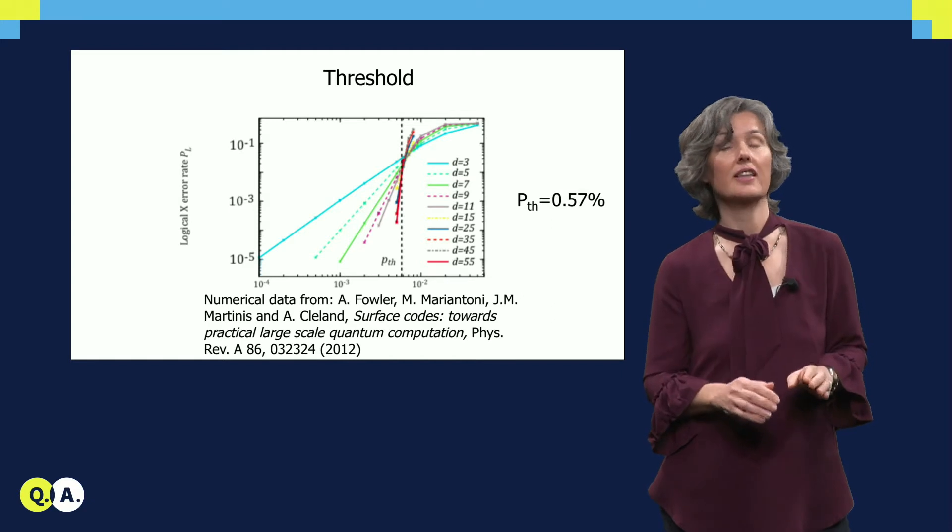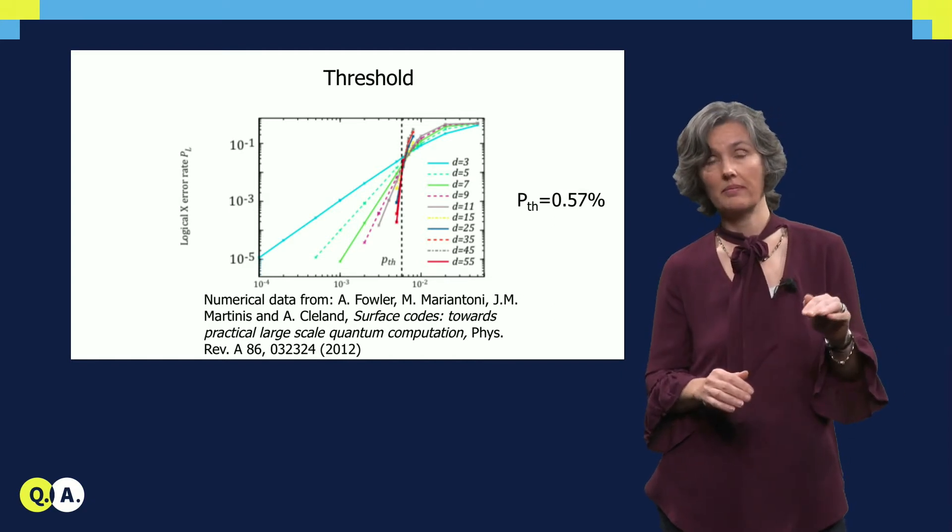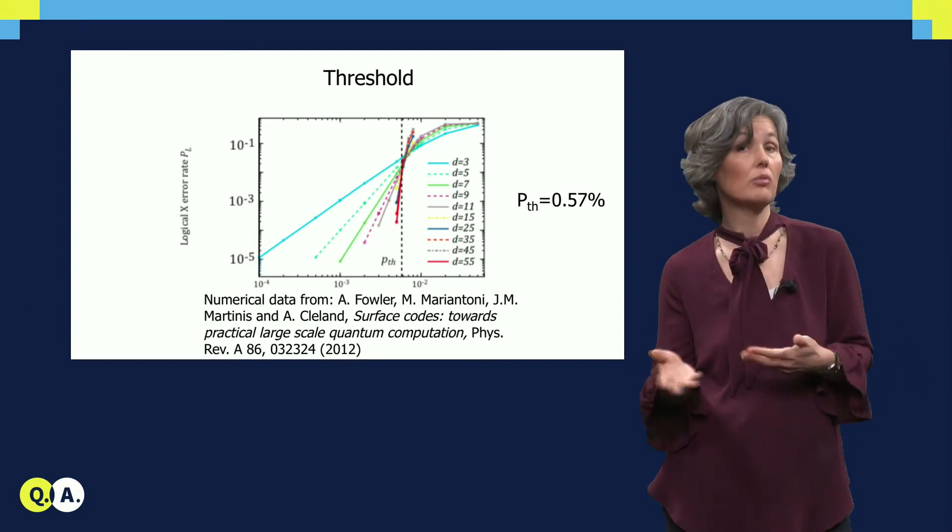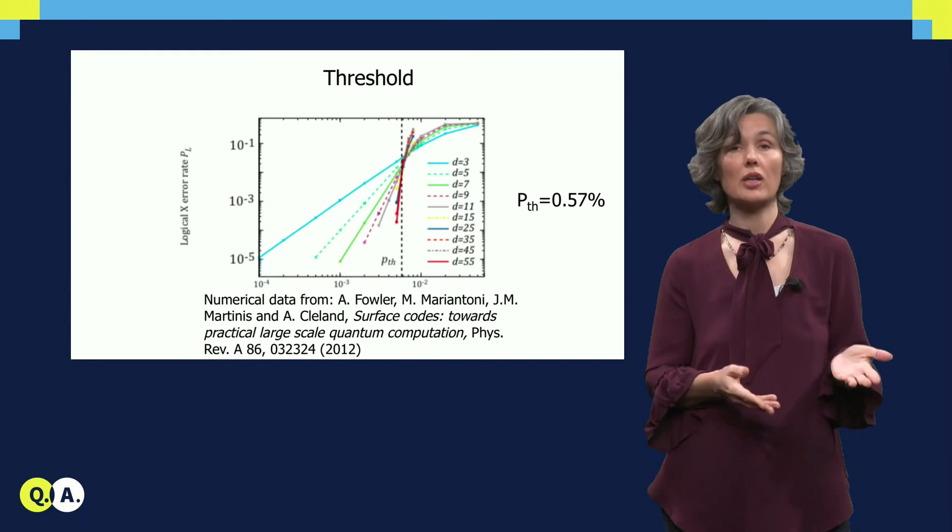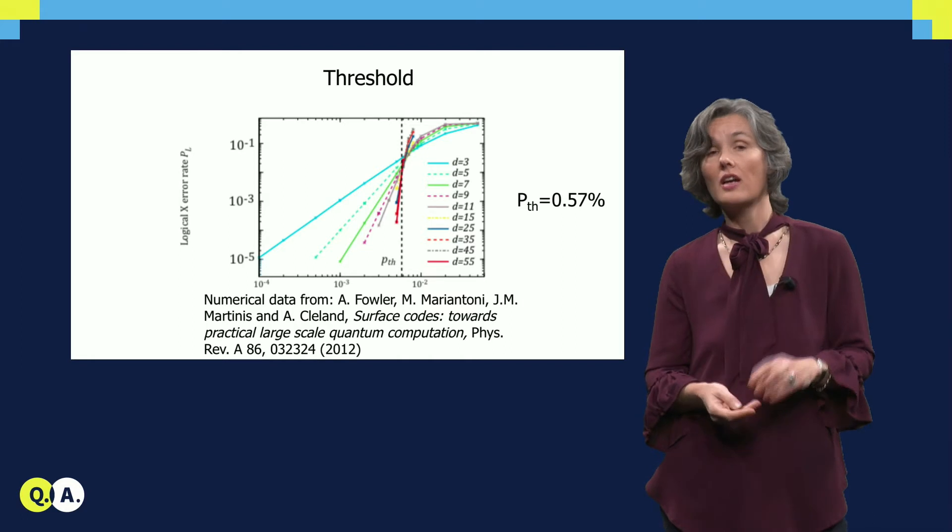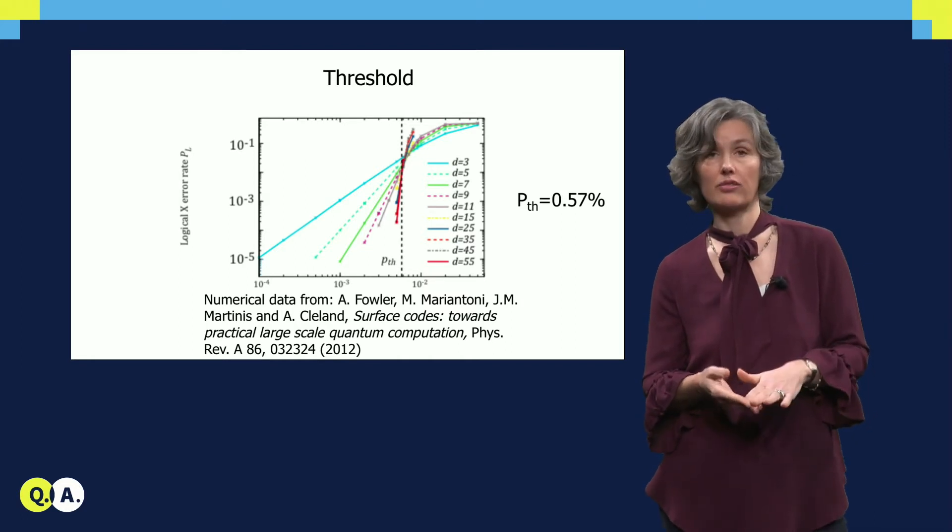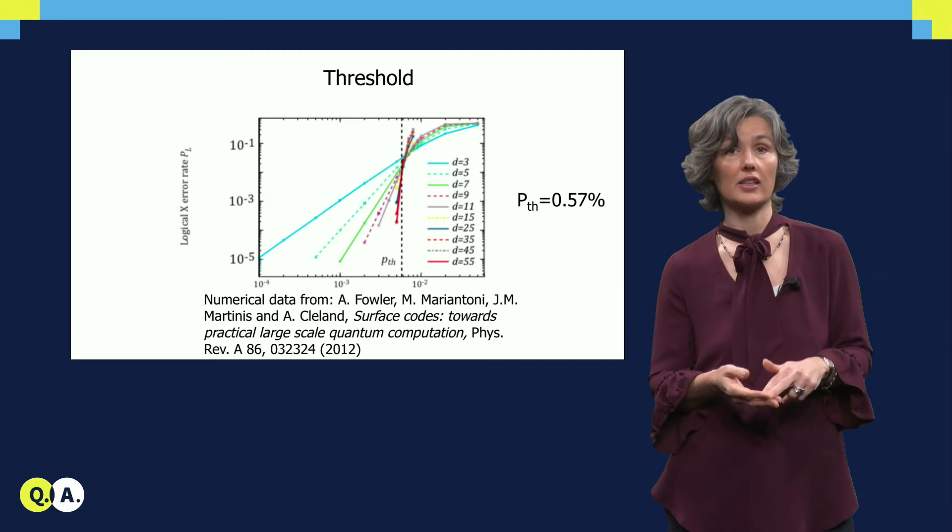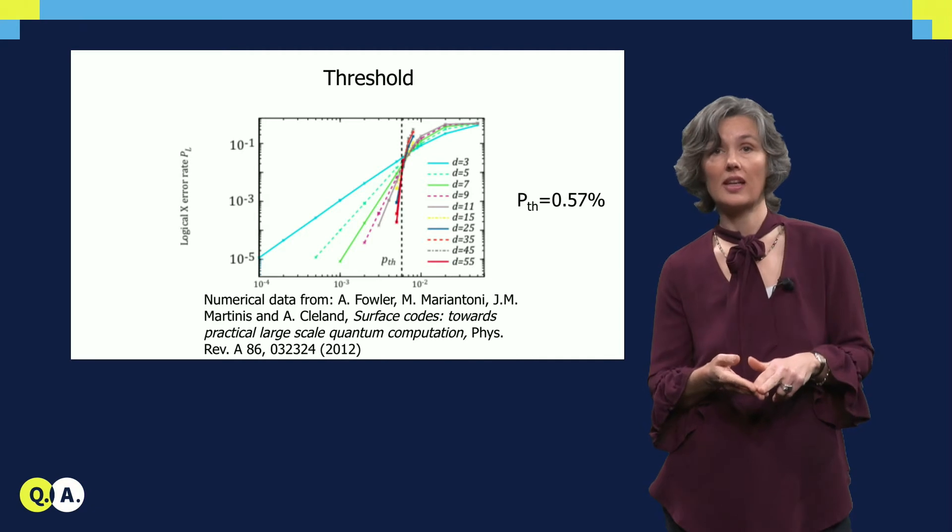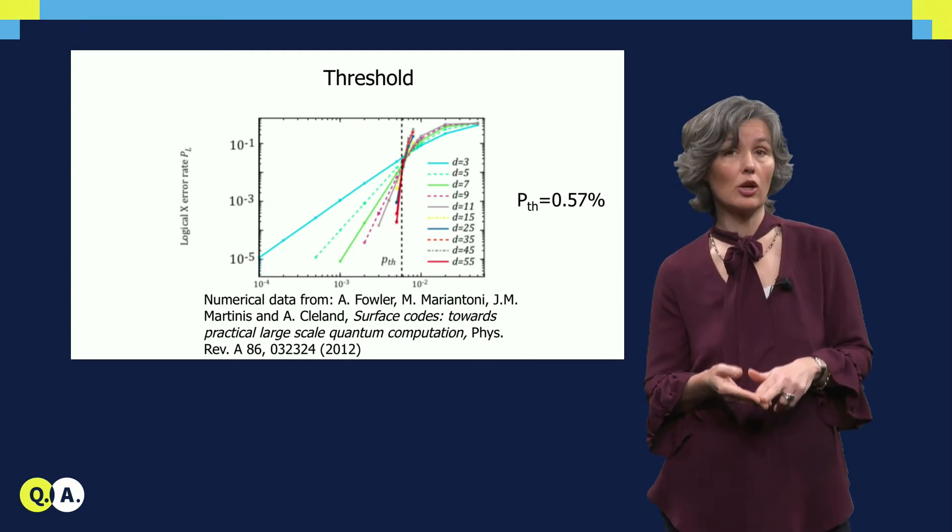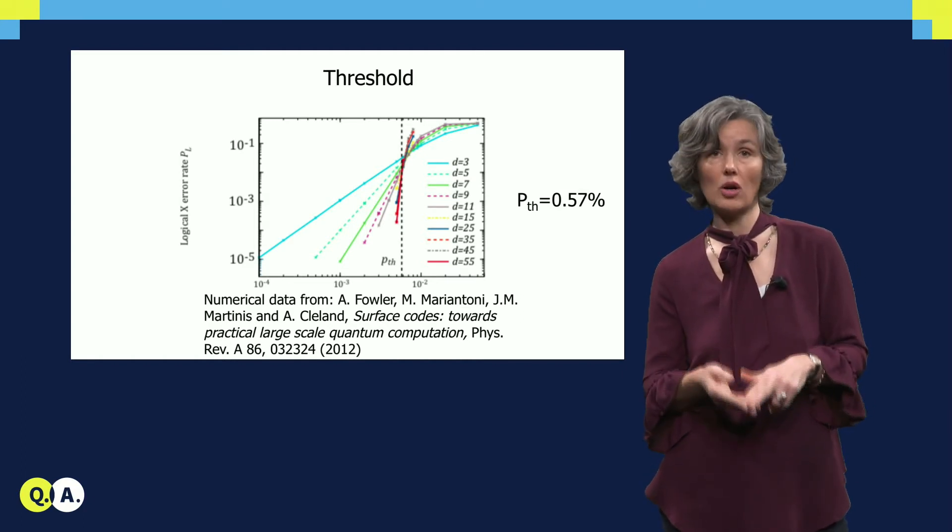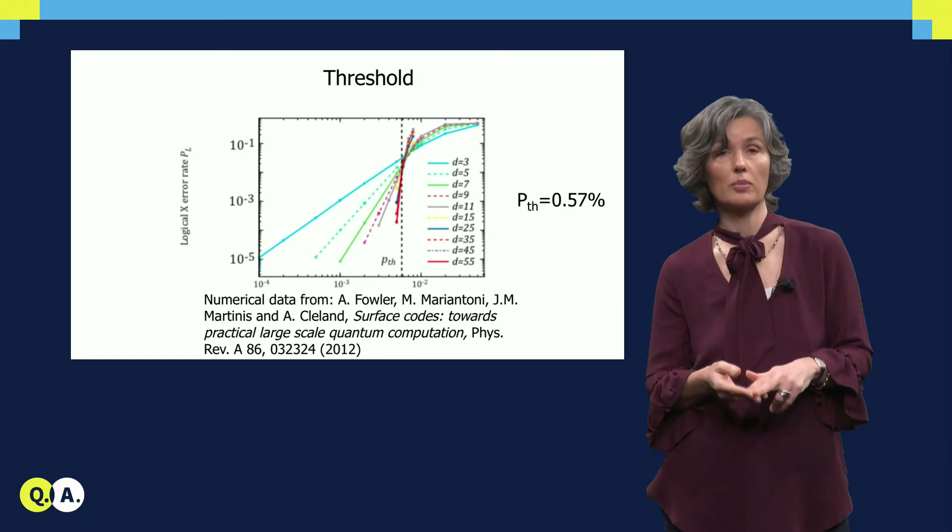The critical error rate per gate is called the noise threshold. This threshold depends on the method of processing error information and it depends on what type of errors we have. It lies somewhere between 0.5 and 1% for the surface code. Thus, in order for hardware to benefit from the use of surface code error correction, it means that idling steps, single qubit and two qubit gates all have to have an error rate at least below 0.5%. Reaching error rates this low or lower is thus an important target for qubit hardware.